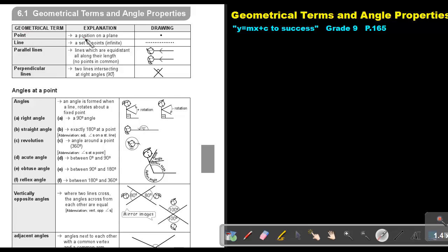What is a point? A position on a plane. There's the point. What is a line? It's a set of points, an infinite set of points. So a lot of points is forming a line.